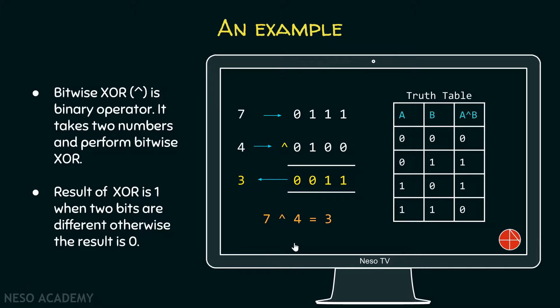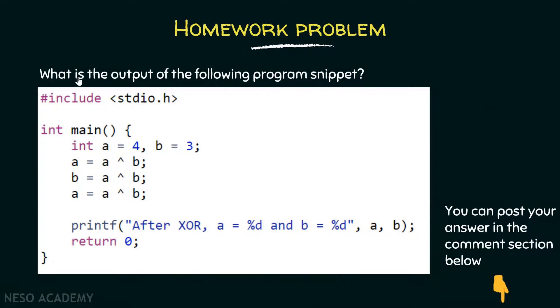Now let's consider one homework problem. What is the output of the following program snippet? Here, value of a is four and value of b is three. In the first line, we are performing XOR between a and b and storing its result in a.